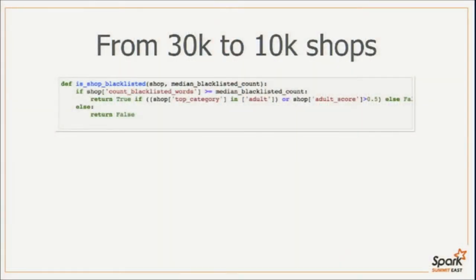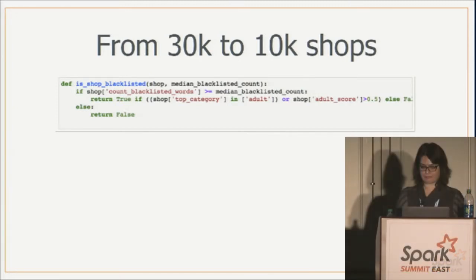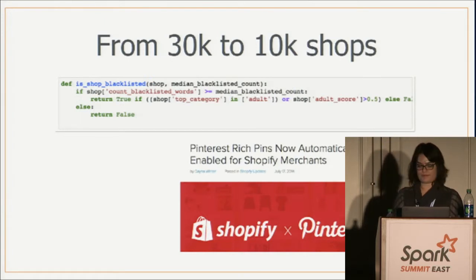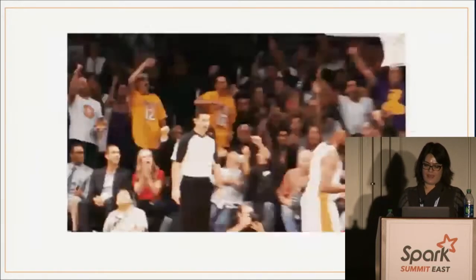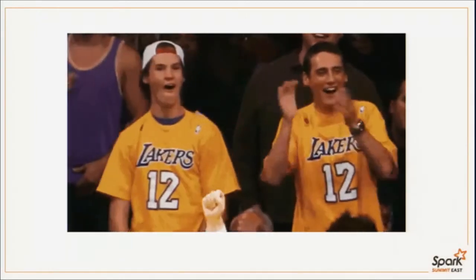Pulling this data into Spark — it came in a CSV, so I put it on the GFS, read it into Spark, and had a simple method that would say: is the count of blacklisted words more than the median expected for a filtered store? If true, look at the category the Turkers provided. For some categories we were more sensitive — if the top category is adults, definitely filtered; but also if the adults score is more than 50%, still filter it. We tuned this function and the results were awesome — from 30K filtered stores we got down to 10K, and could pass about 90,000 of our stores to Pinterest. The deal went live and everyone was happy, getting results in a very short time period.